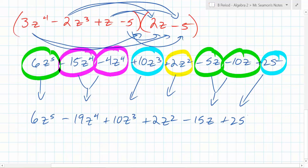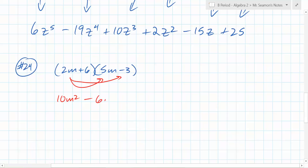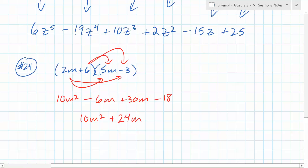Are we done? Yes. Everything times everything — just make sure you keep track. Do it piece by piece and it falls together really nicely. Remember — not FOIL, everything times everything. How many products do we have to do in this one? Four. So what's this one going to be? Then minus 6m, plus 30m, and then plus 24m, minus 18. Everything times everything.